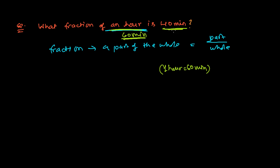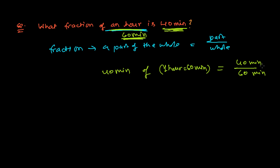So 40 minutes out of one hour, which is 60 minutes — that gives us 40 divided by 60. Since fractions do not have units, we can cancel them, giving us 40 over 60 as our answer.